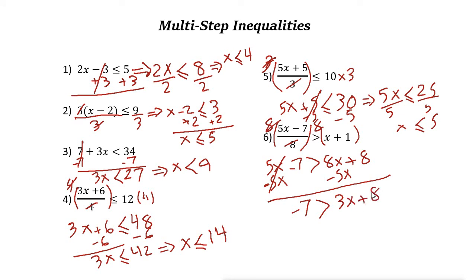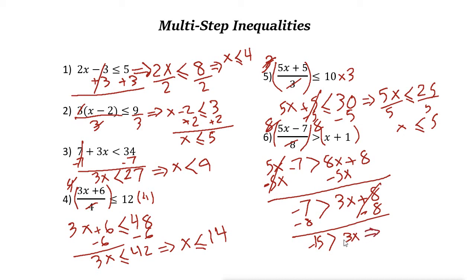Then plus 8. Now we need to get rid of this 8, so subtract 8 from both sides. Negative 7 minus 8 is negative 15, and these cancel out, leaving 3x. Divide both sides by 3 — that becomes negative 5 greater than x. So x is less than negative 5 is the answer.